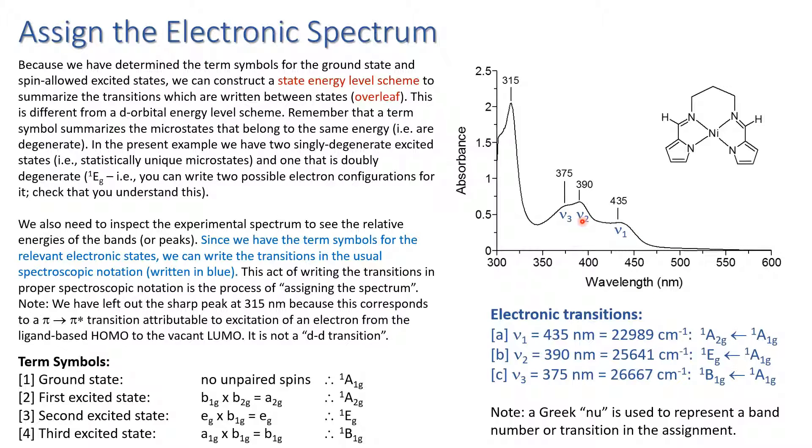The second band is similarly treated. So we get the energy in reciprocal centimeters and we make the assignment singlet Eg from singlet A1g. The third band, singlet B1g from singlet A1g. Now the reason why we've worked out the energies of these states is going to become apparent when we determine the state energy level scheme next.